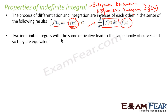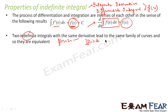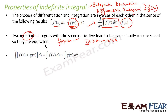The second property says that two indefinite integrals with the same derivative lead to the same family of curves, and so they are equivalent. For example, if f is equal to 2x, then the integral is x squared plus k. We get so many curves, but they are equivalent and belong to the same family.